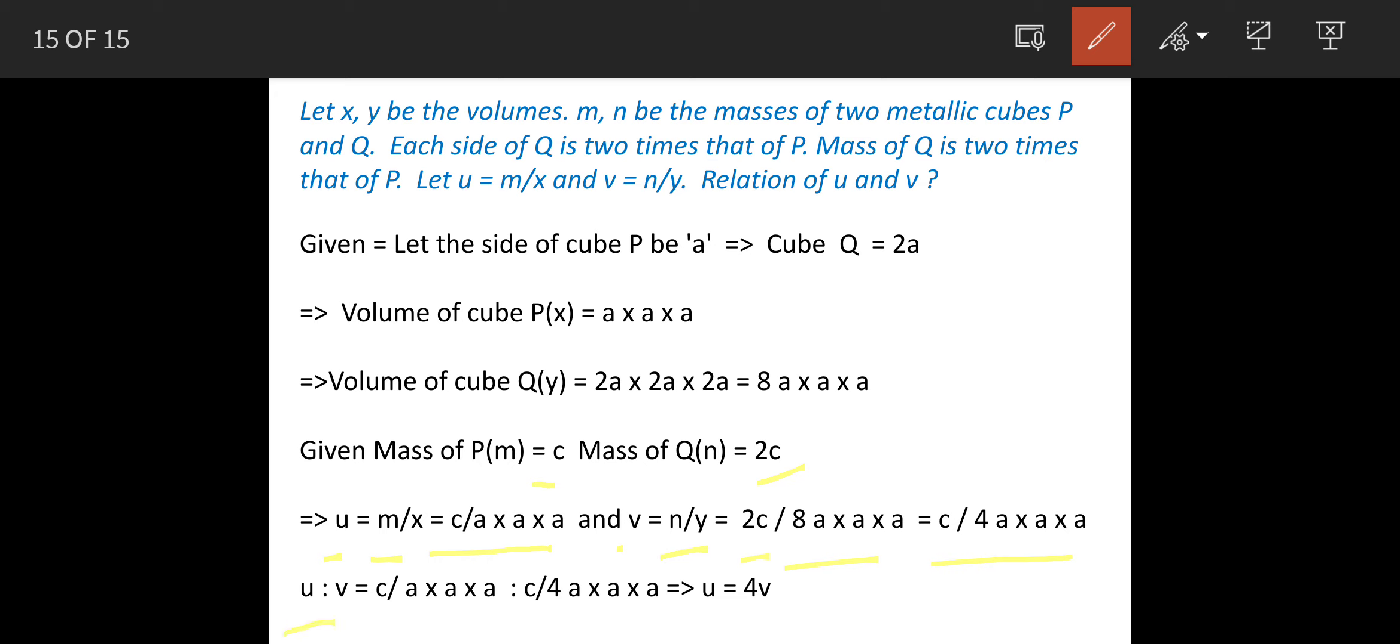So when you take the ratio of U and V, when you solve this you will get U is equal to 4V. So answer is option A, U is equal to 4V. This is our answer. Thank you.